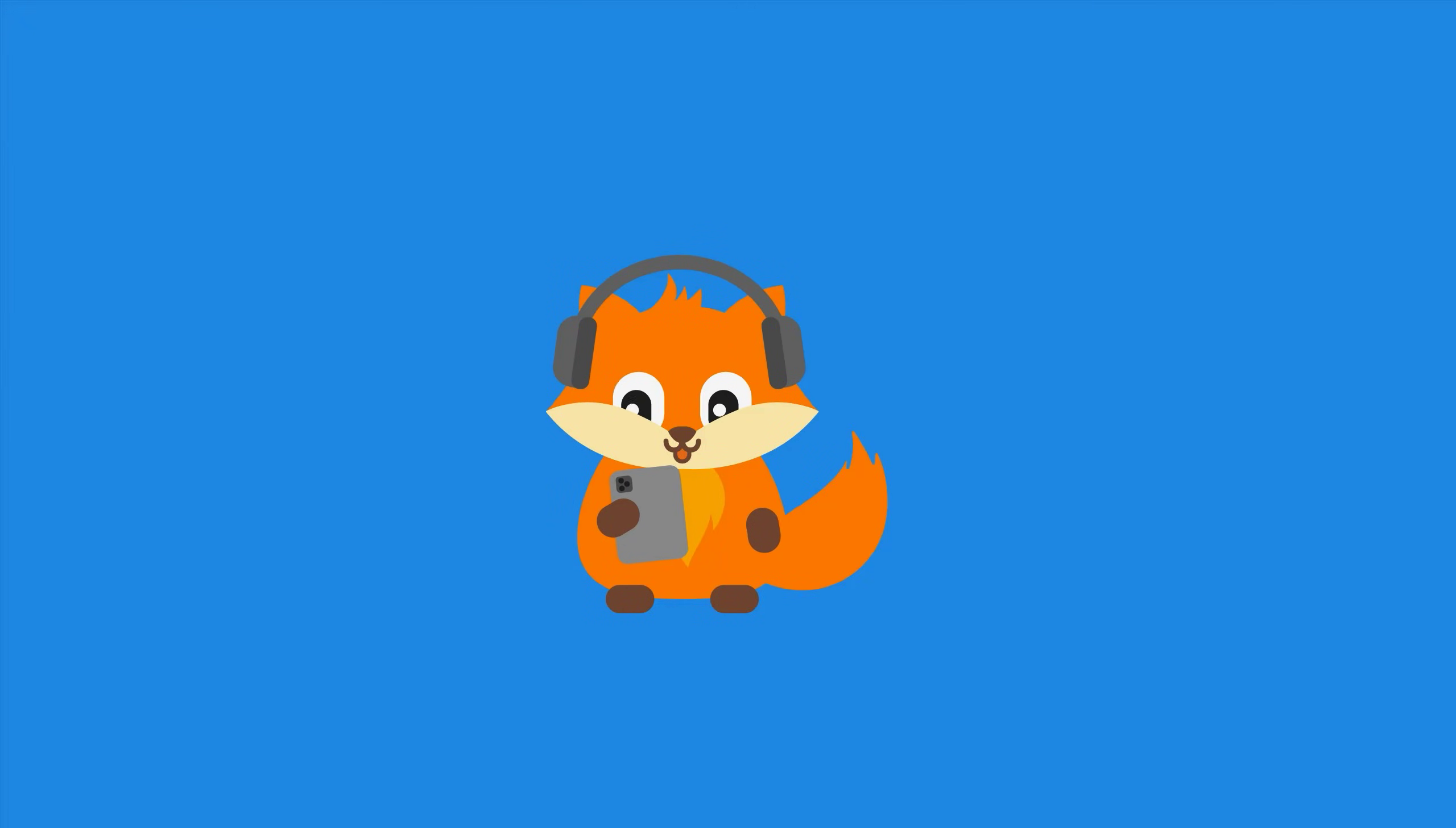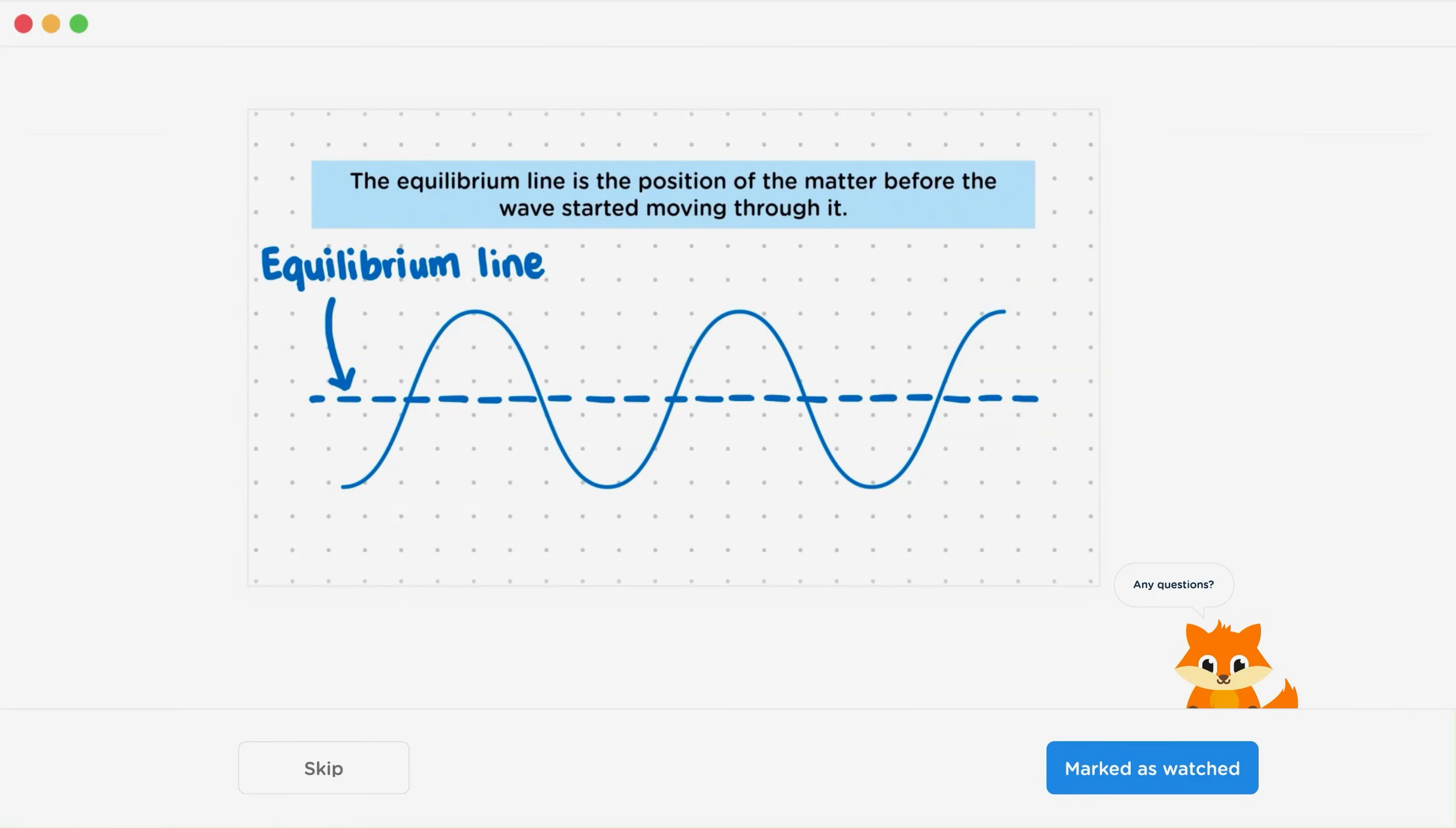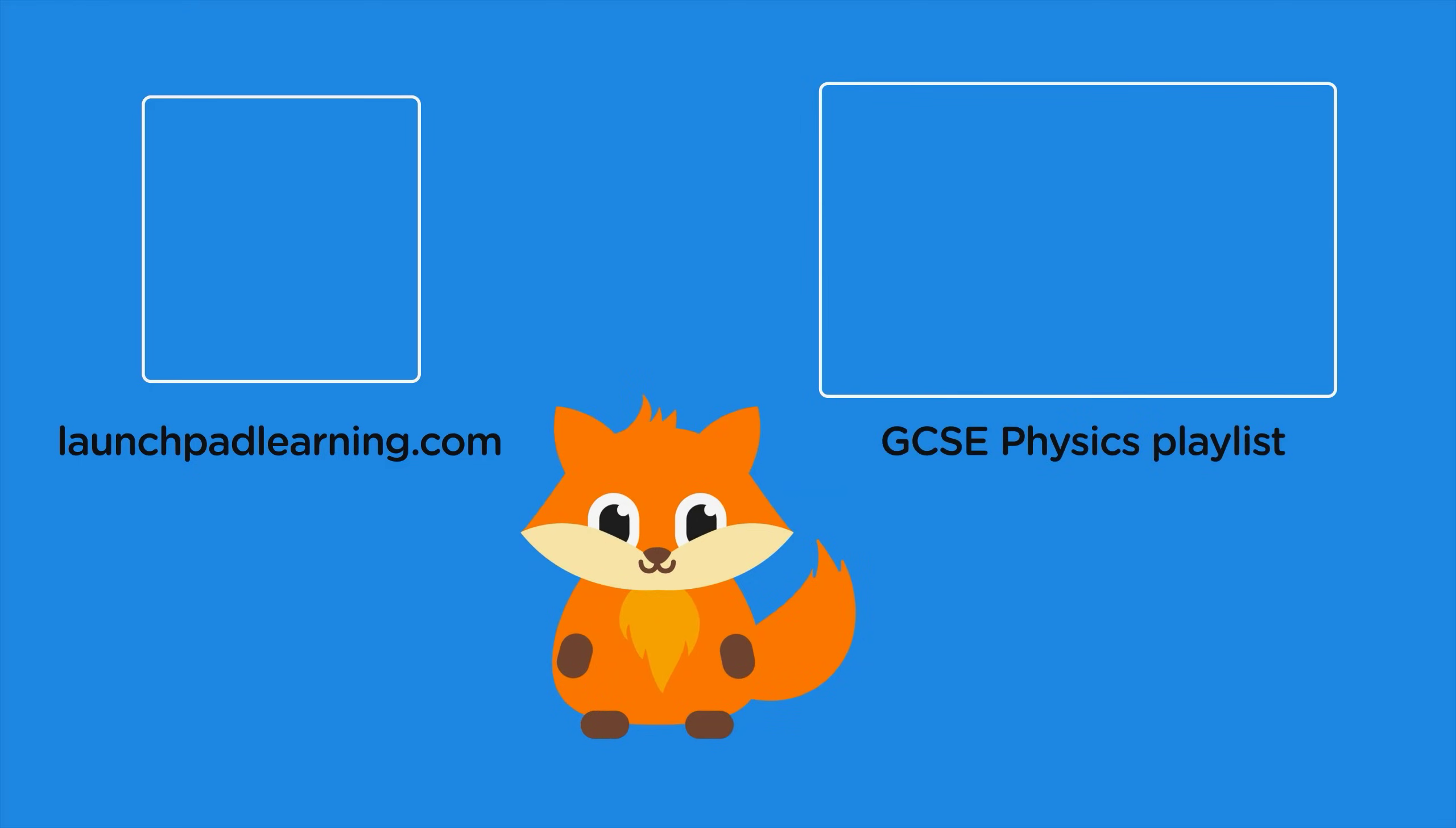If you want to take your GCSE revision to the next level, head over to launchpadlearning.com and check out our smart learning platform that's been designed to get you top results in your exams. We cover your whole specification and make revision fun with interactive quizzes, easy-to-follow videos, and more. You'll be kept motivated by your own AI tutor who's here to support you every step of the way. To check it out for yourself, click here, or click here to keep watching a selection of the videos from our full GCSE physics course. See you there!